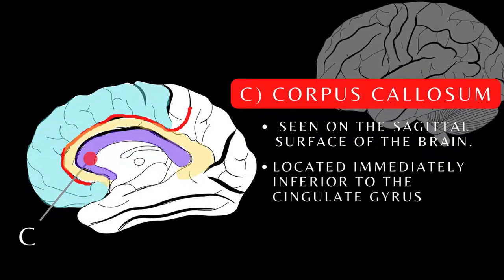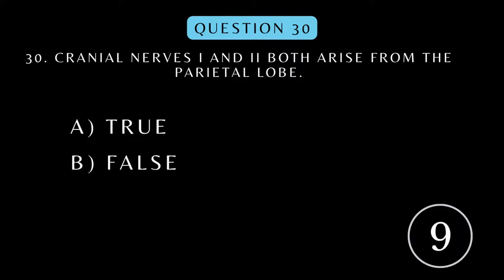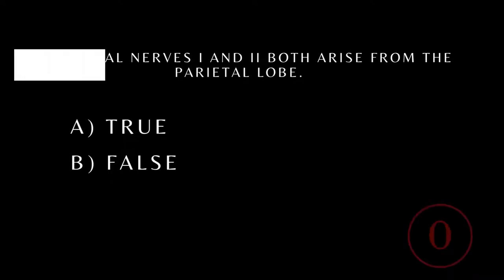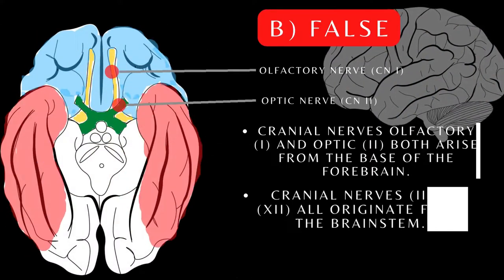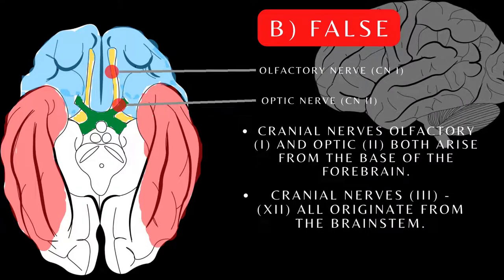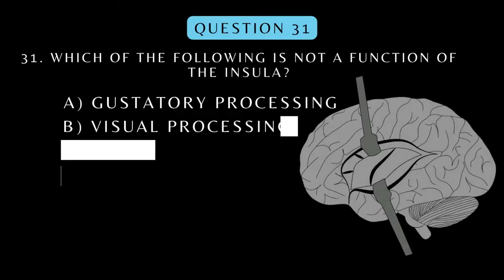True or false: Cranial nerves 1 and 2 both arise from the parietal lobe. Which of the following is not a function of the insula?